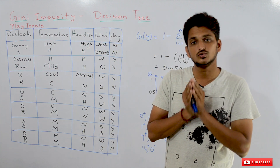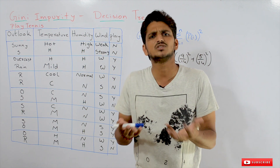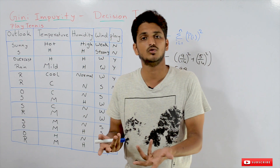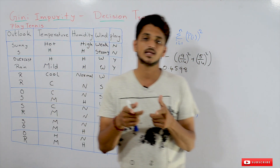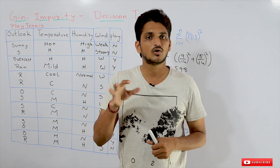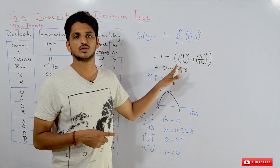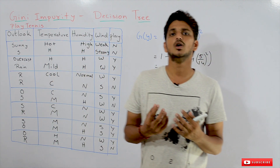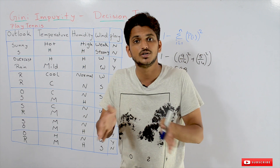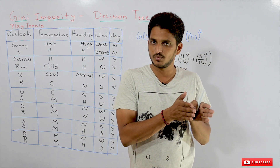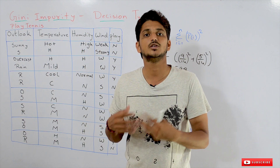So in place of entropy we can use Gini impurity — that is the use of Gini impurity. Why should we use it? Calculating Gini impurity is computationally cheap when compared to entropy, because in entropy we are having a log value, and calculating the log value is computationally complex. That is why we use Gini impurity in place of entropy. We calculate Gini impurity, then calculate information gain using Gini impurity, and use that information gain for constructing the decision trees.